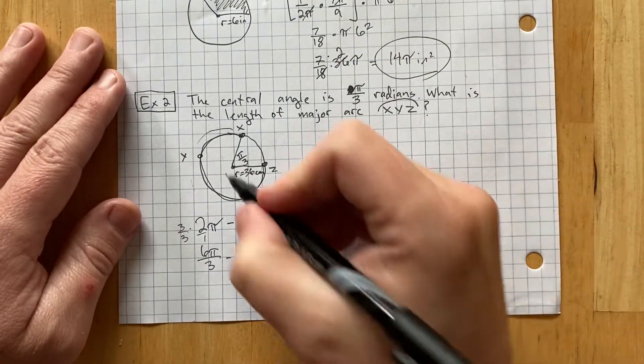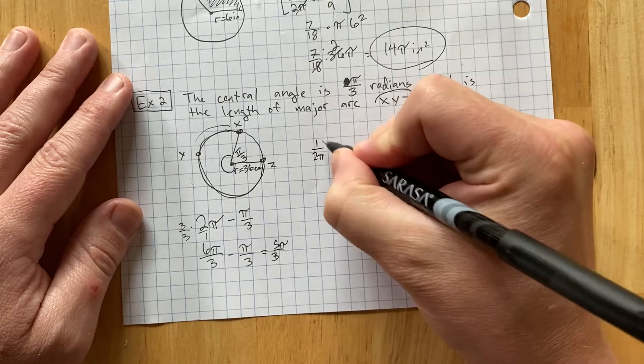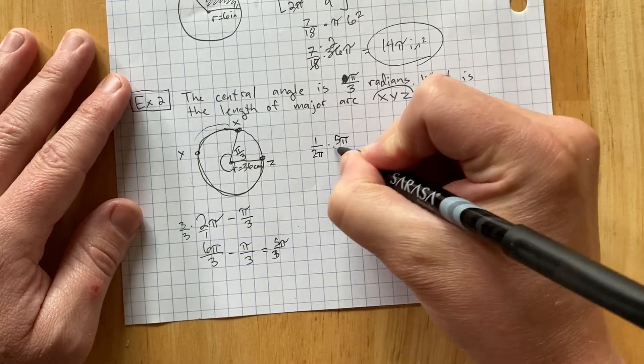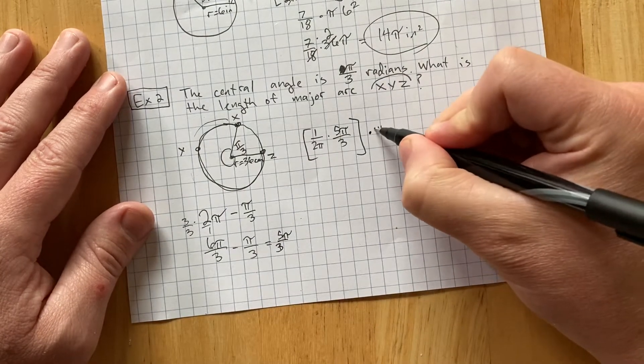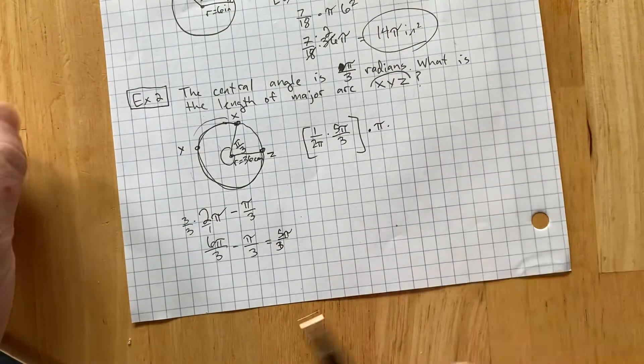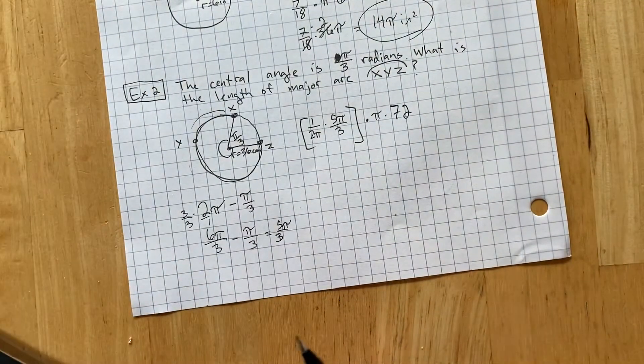Or that's this central angle. So, now I do 1 over 2 pi times 5 pi over 3. And then, I need to take that entire thing and multiply it by pi times the diameter. The diameter is not 36. Diameter is 72. You double the radius.